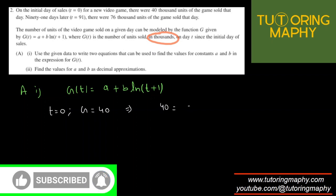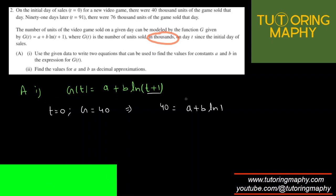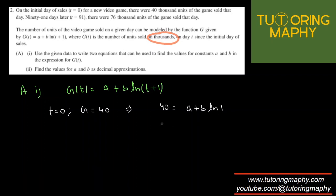So 40 will be equal to A plus B ln 1 because 0 plus 1 is 1 and ln 1 is 0. So 40 is equal to A and let's flip the omelette. So A is equal to 40. That's an equation and that's also a value of A. So we are fortunate that we also got the value of A.